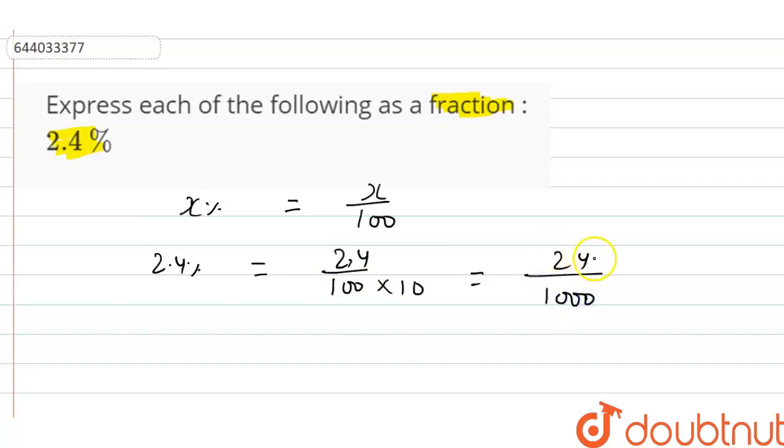So just divide by 4 to get 6 upon 250. Now divide by 2 to get 3 upon 125.